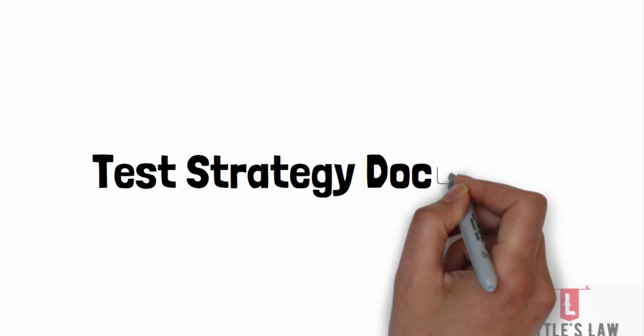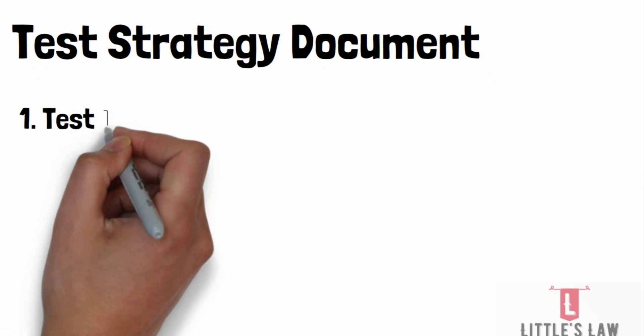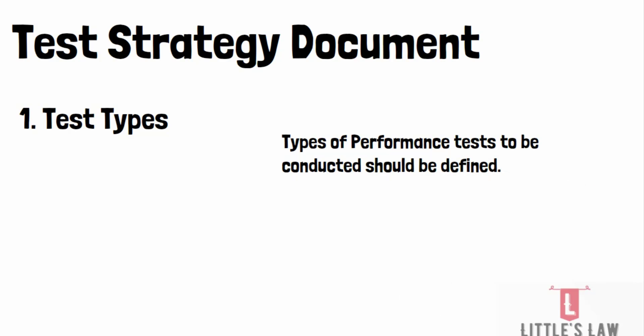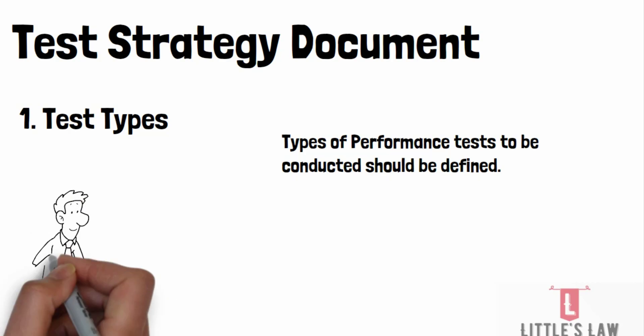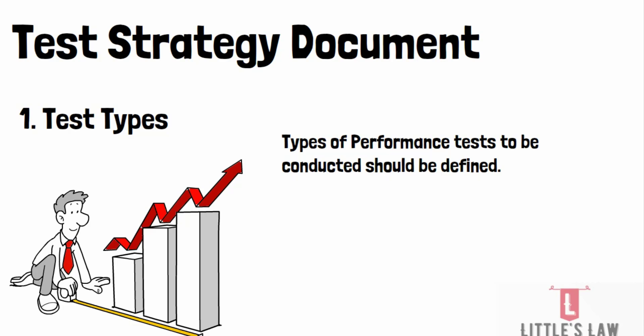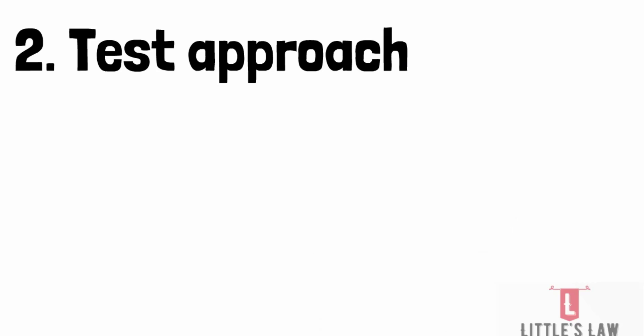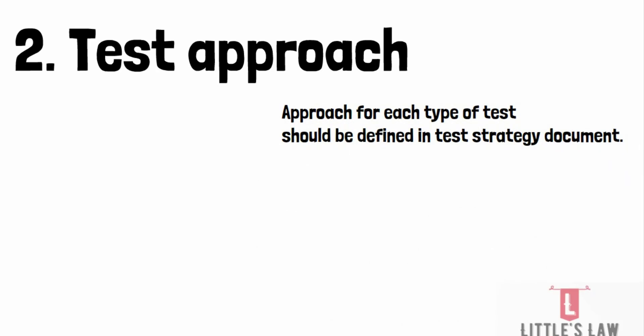The second deliverable is the test strategy document. It contains the test types to be conducted — we all know the types: load testing, stress testing, and volume testing. Load testing tests the system's ability to handle a certain number of concurrent users; stress testing tests the system's ability to handle peak loads; and volume testing tests the system's performance with a large amount of data. The test approach for each type should also be defined — for load testing, this includes the ramp-up, steady state, and ramp-down; for stress testing, it includes the peak load levels and duration.